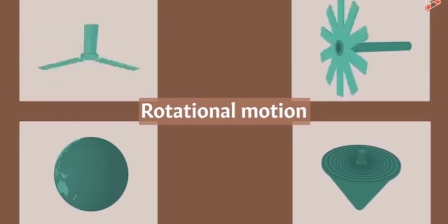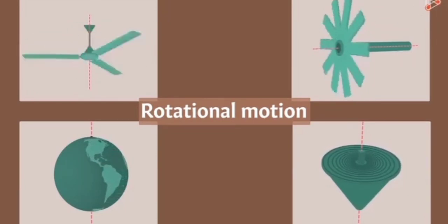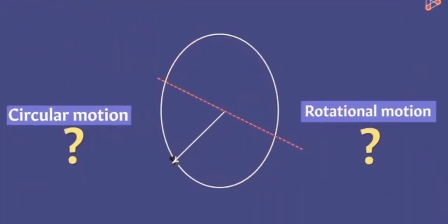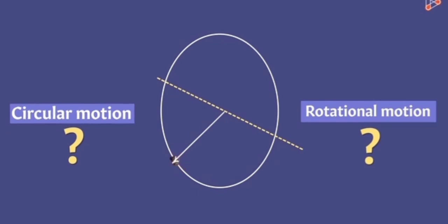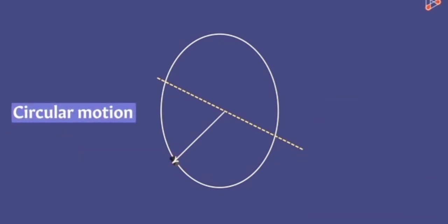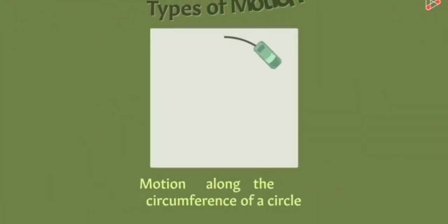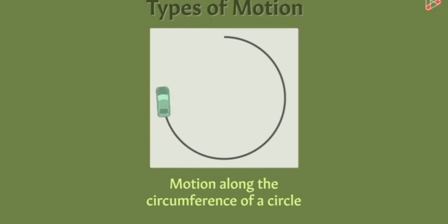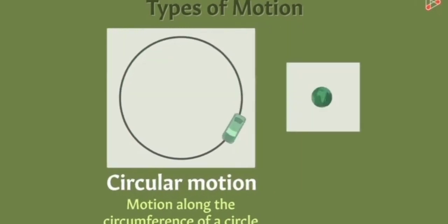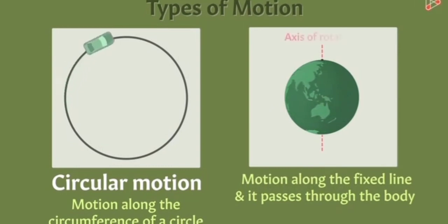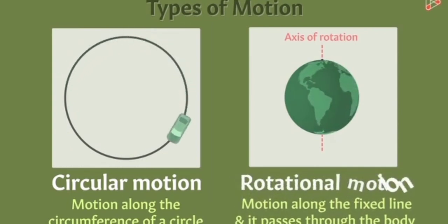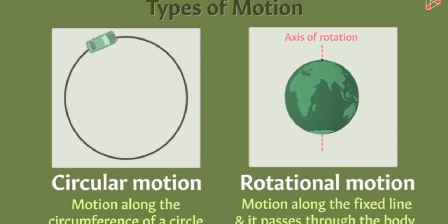In all examples of rotational motion, the axis of rotation passes through the object — it is part of the object. But in the case of the whirled stone, the axis of rotation is not passing through the object; it is totally separate from the object. Hence we call it circular motion, not rotational motion. To summarize: if a body moves along the circumference of a circle it performs circular motion; if it spins around a fixed axis that passes through it, it performs rotational motion.